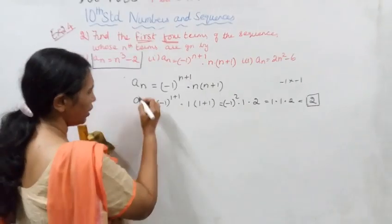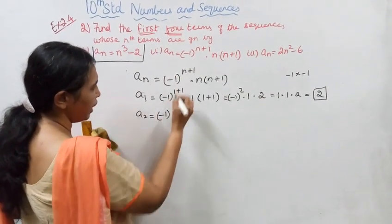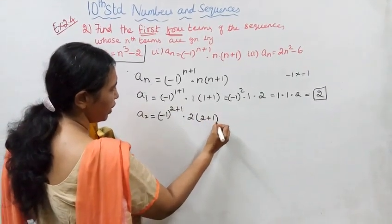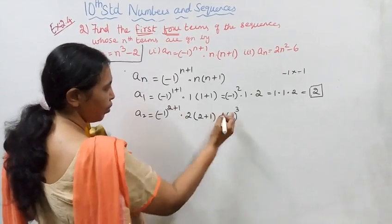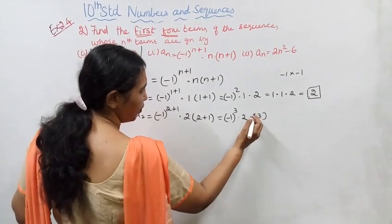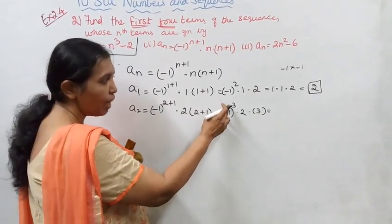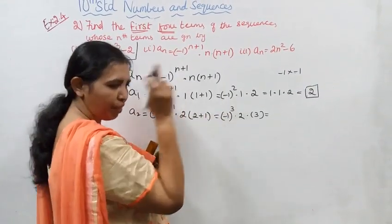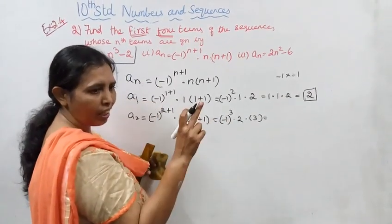a_2: minus 1 to the power 3, into 2, into 3. Inside the bracket negative, the power is odd, so answer is negative. Inside the bracket negative, the power is even, answer is positive.